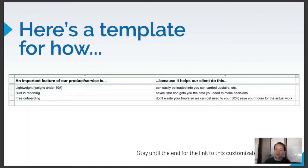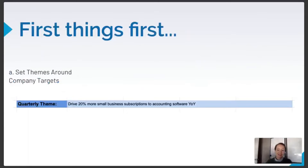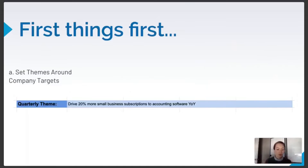Now we're going to dig into the meat of the content matrix — it's spreadsheet time. This content matrix exists as a Google spreadsheet, and you'll get a link to create a copy for yourself and customize it to your business. The first step is to set your content themes around your company goals. Depending on how your company sets up its goals, these could be monthly, quarterly, or annual. It's really important to tie your content to metrics — if you're creating content with no goal in mind, you're essentially wasting your own time and your users' time.